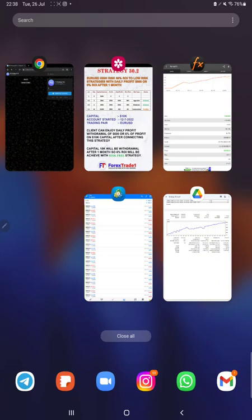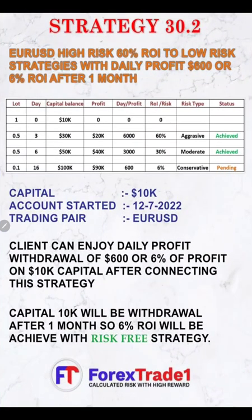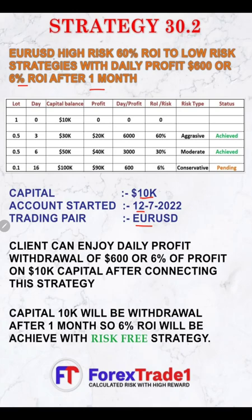Starting the video, here we have details for Strategy Number 30.2: EUR/USD, high risk 60% ROI to low risk strategy, with a daily profit of $600 or 6% ROI after one month. The strategy is initiated with $10,000 capital and the account started on the 12th of July with the trading pair EUR/USD. We have a complete mathematical calculation available showing how we connected this strategy.